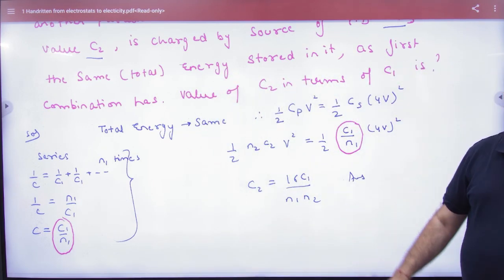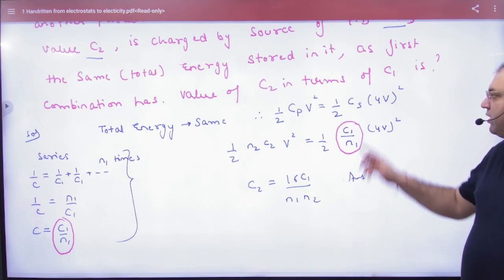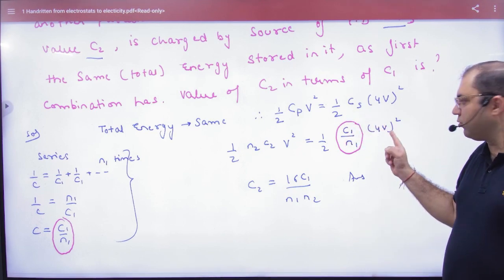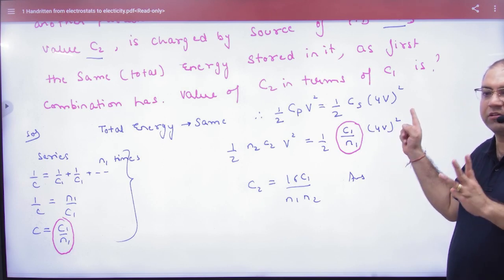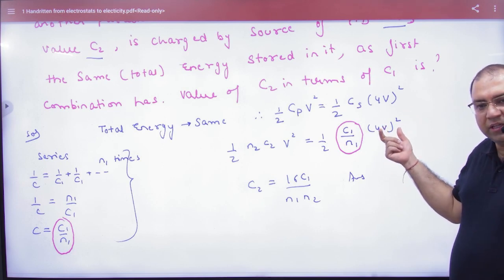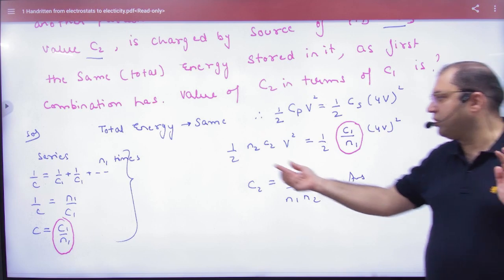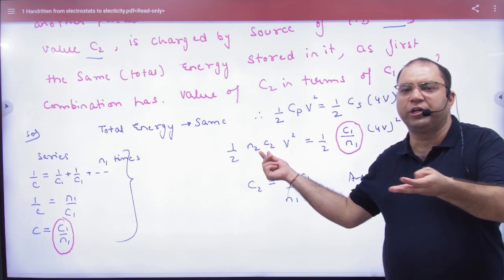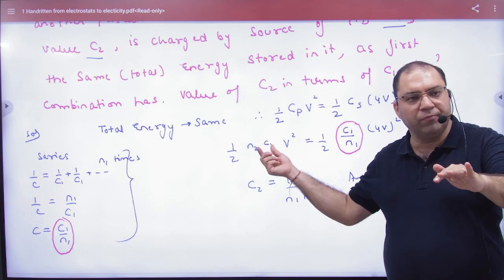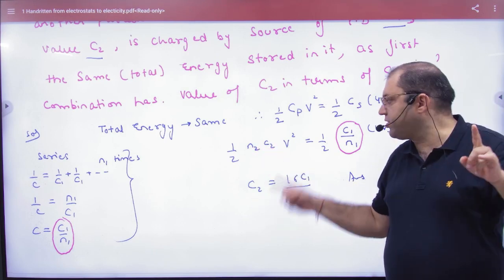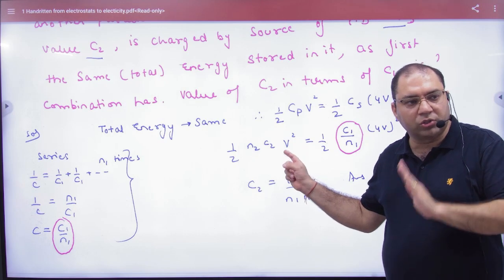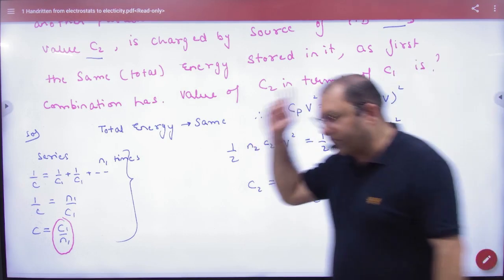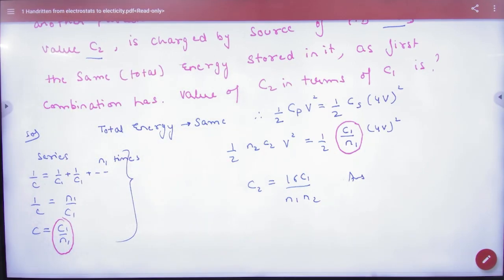So series combination में energy का formula क्या होगा: half into C1 by N1 into 4V square. Parallel combination में equivalent capacitance क्या होगी: C2, C2, C2, N2 times है N2 C2 और V के साथ charge किया जा रहे है. Total energy parallel में आगी. Parallel सीरीज की energy बराबर है तो objective mark कर लेना. C1 C2 के बीच में relation आजाएगा.